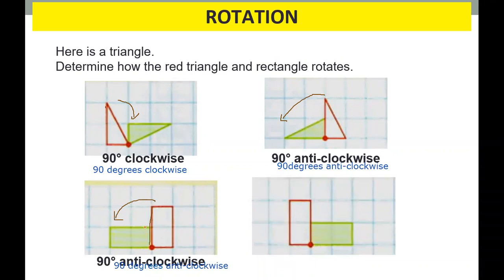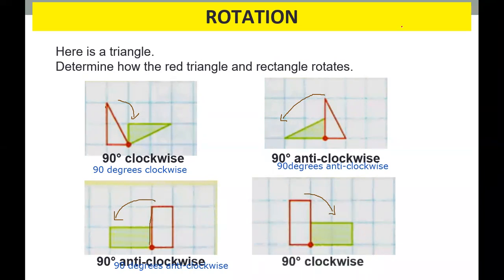If it will rotate to the left, it will be anti-clockwise. If it will rotate to the right, it will be clockwise. So if it rotates to the right, it's clockwise. If it rotates to the left, it will be anti-clockwise. So it rotates to the right, therefore it is clockwise — and it is only 90 degrees. That's an example of rotating 90 degrees clockwise and rotating the shape 90 degrees anti-clockwise.